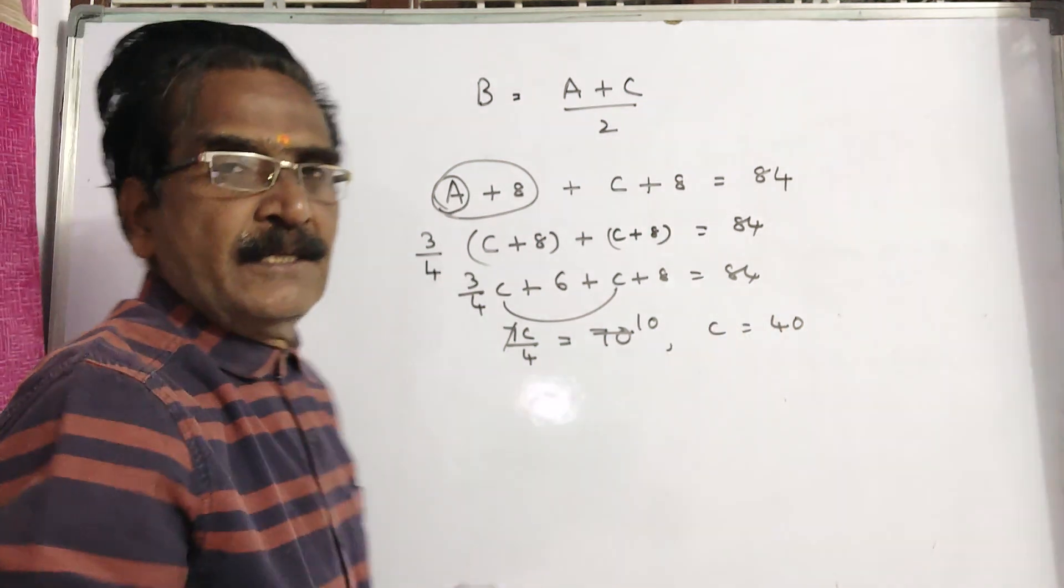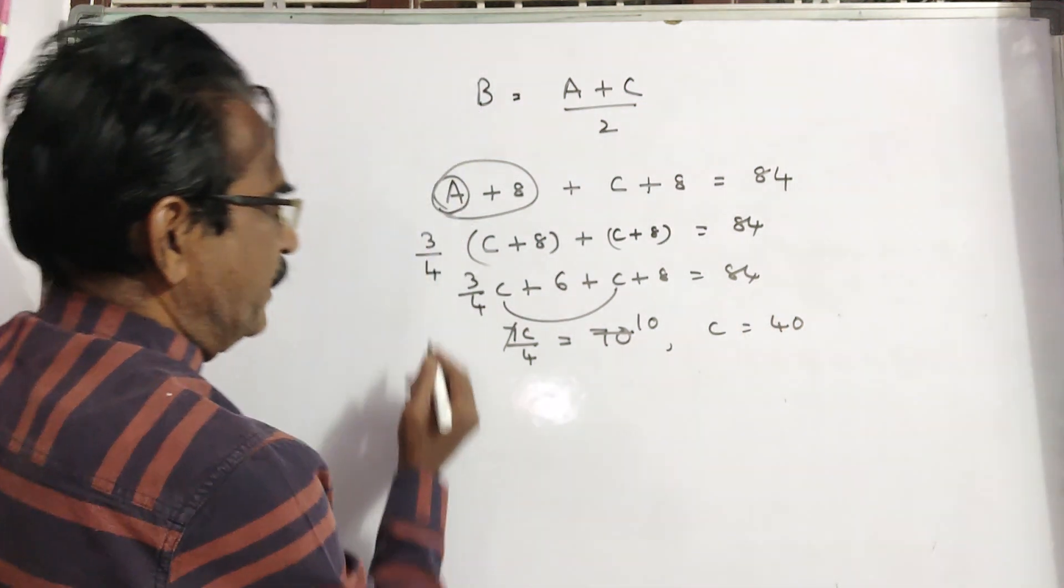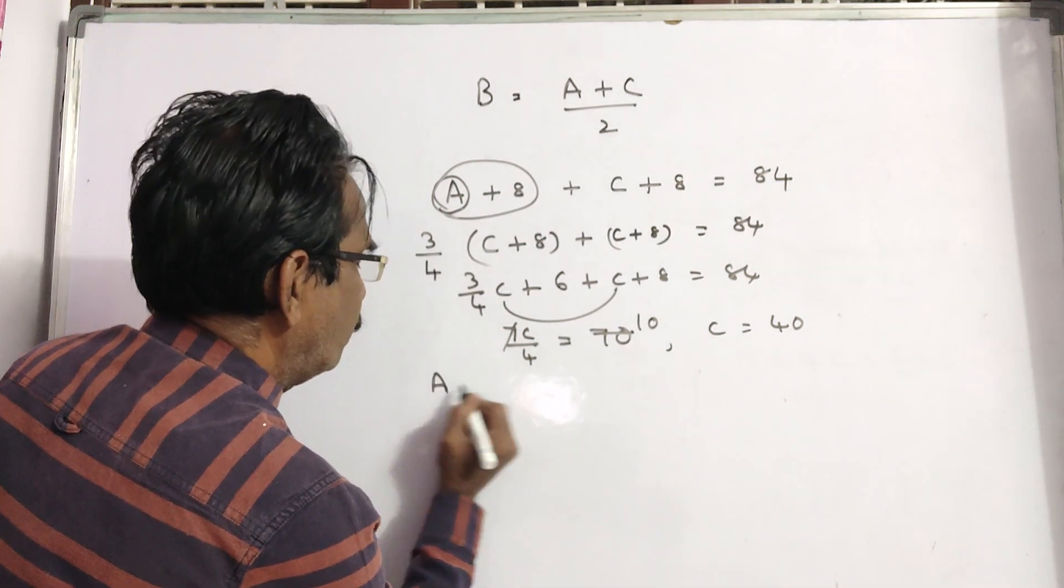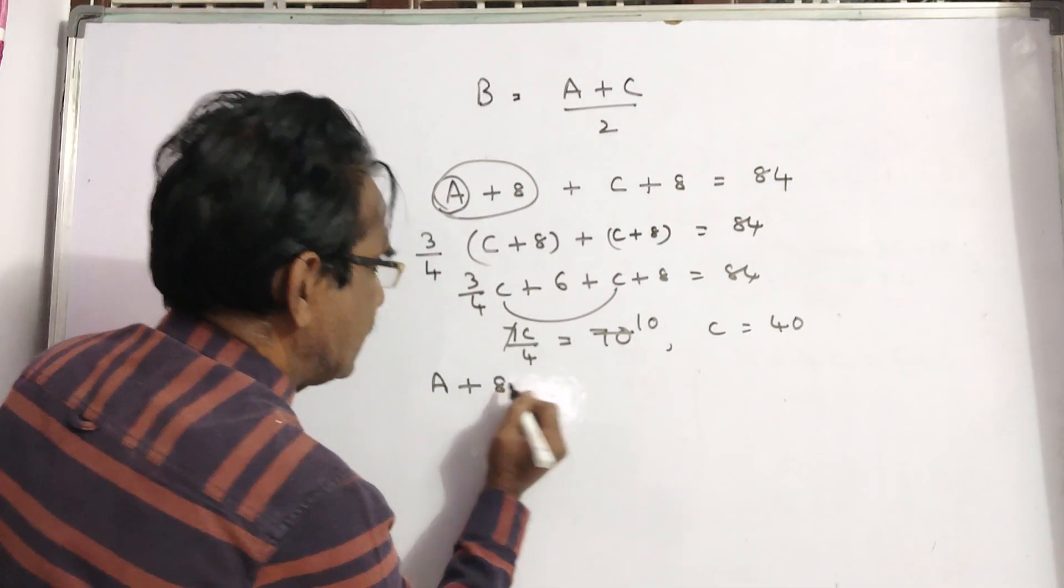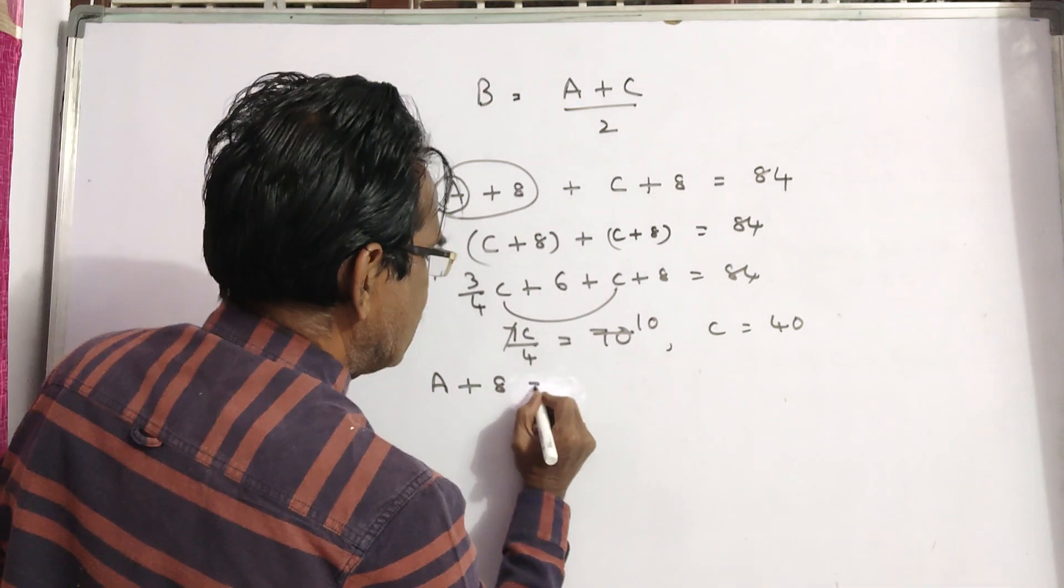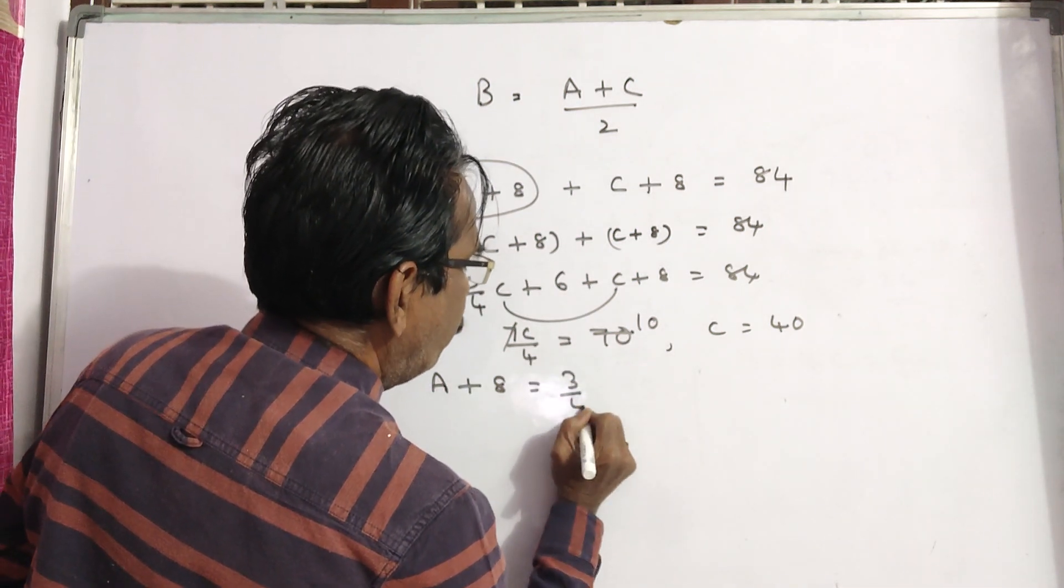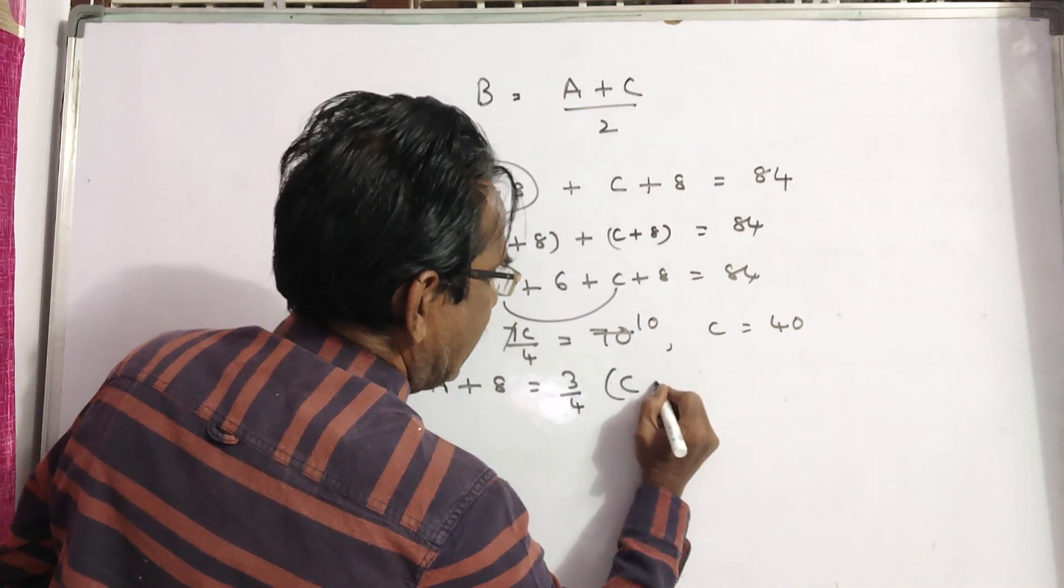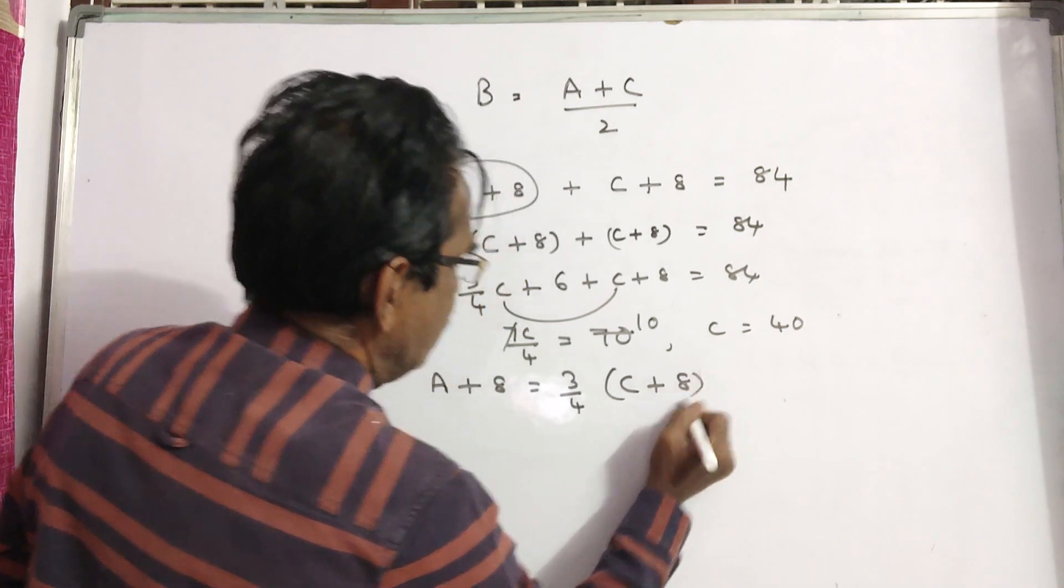And from this we can find A. A's age after 8 years is equal to 3 by 4 of C's age after 8 years.